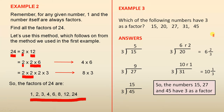Example 3: which of the following numbers have 3 as a factor? We have 5 numbers. Let's take the first one: 3 into 15 goes 5, evenly — 3 times 5 is 15. The second one: 3 into 20 goes 6 with a remainder of 2, because 3 times 6 is 18. That can be written as 6 and 2 thirds.